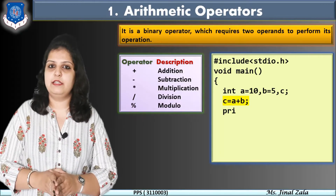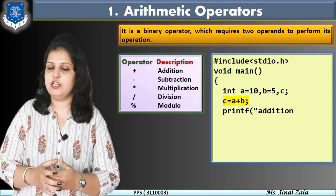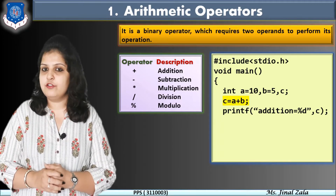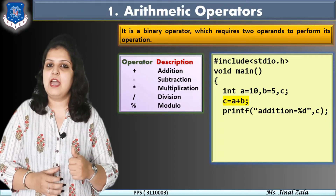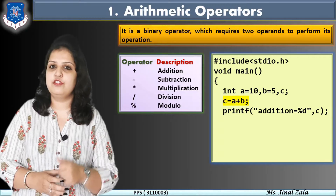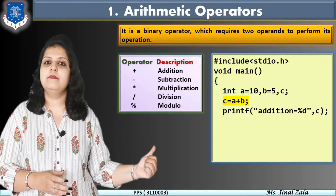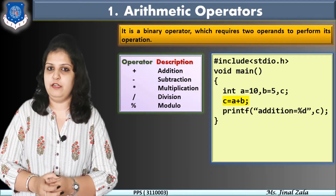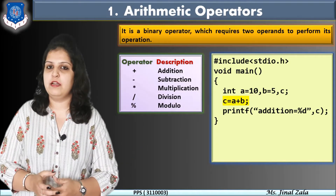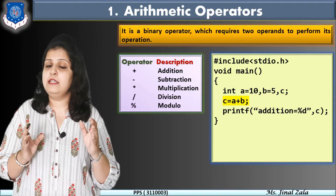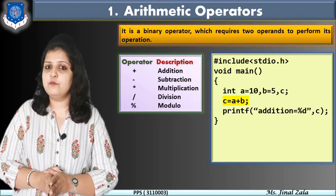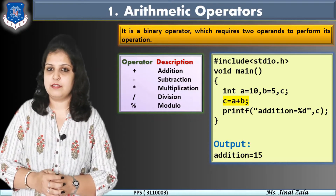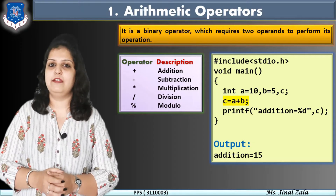Finally, if you want to print the value of the c variable, write the printf statement like: printf("addition = %d", c). For printing the value of c, we have to write the control string. The control string for an integer variable is %d, as discussed in our last video session on data types. After the double inverted comma, do comma and write the variable name — that is c, because our answer is stored in c. So when this program is executed by the compiler, our output will be: addition = 15. In this way we can use any of the arithmetic operators.